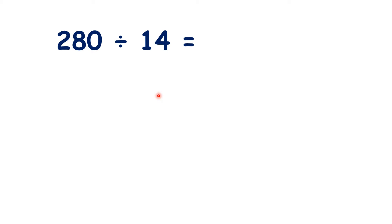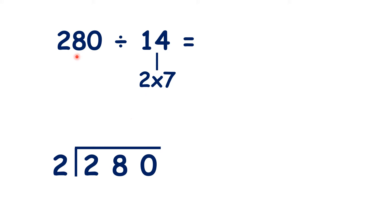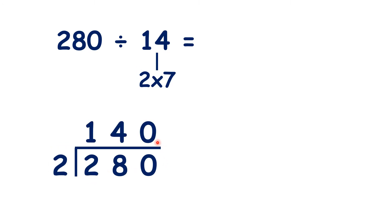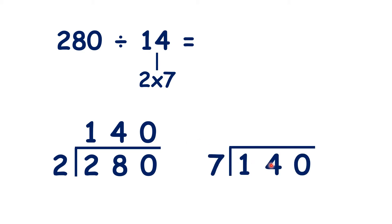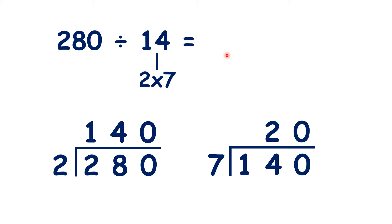Now, you might already know your division facts for your times tables, but we can use factors when we're asked to divide by a 2-digit divisor, like we have here. If we know that 14 is 2 times 7, we can first divide 280 by 2 — our first factor. Then we can divide our first answer, 140, by 7, our second factor. This gives us our answer, 20.